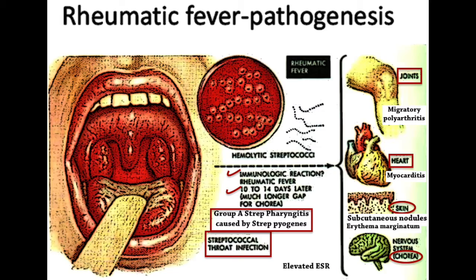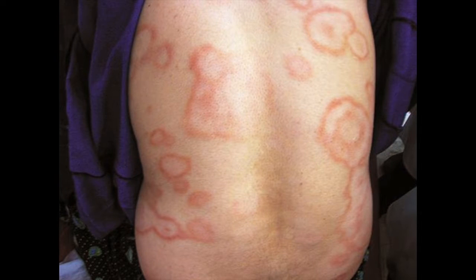Major criteria for the diagnosis of rheumatic fever include migratory polyarthritis, subcutaneous nodules, as well as erythema marginatum — a reddish rash that begins as macules on the trunk and spreads outward, clearing in the middle to form rings.